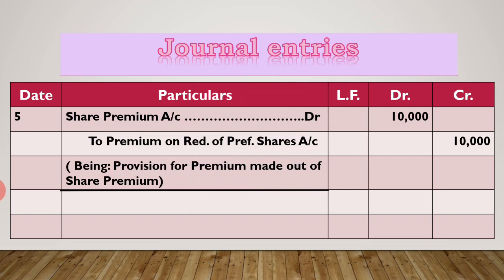Now entry number 5: premium write-off is 10,000. We have share premium of 18,000 which is a sufficient amount. So no use of P&L account is needed. Share premium account debit to premium on redemption of preference share account, 10,000. Being: provision for premium made out of share premium.